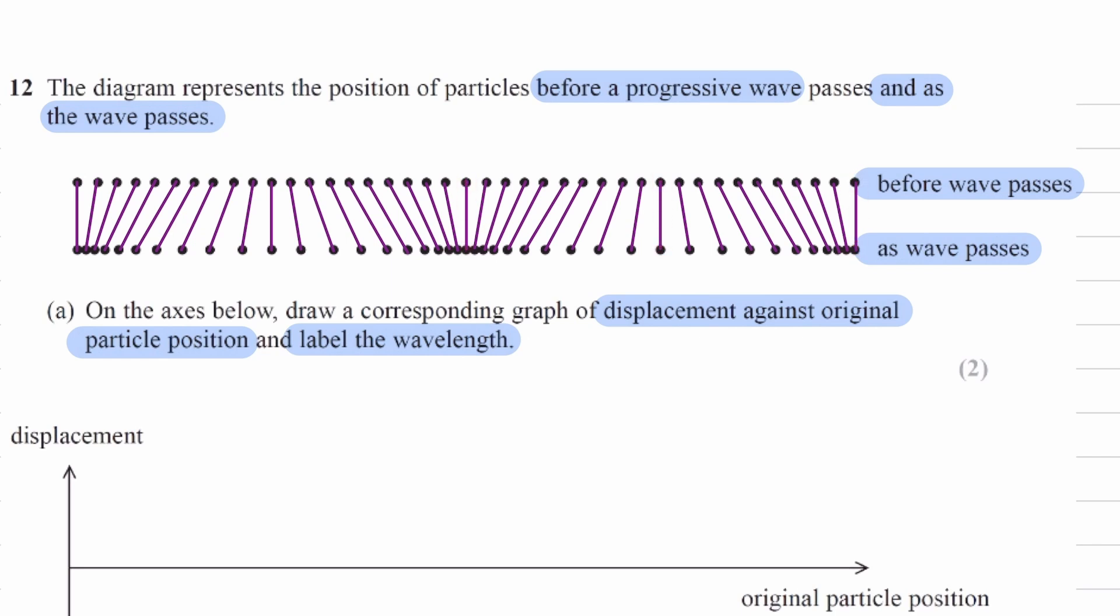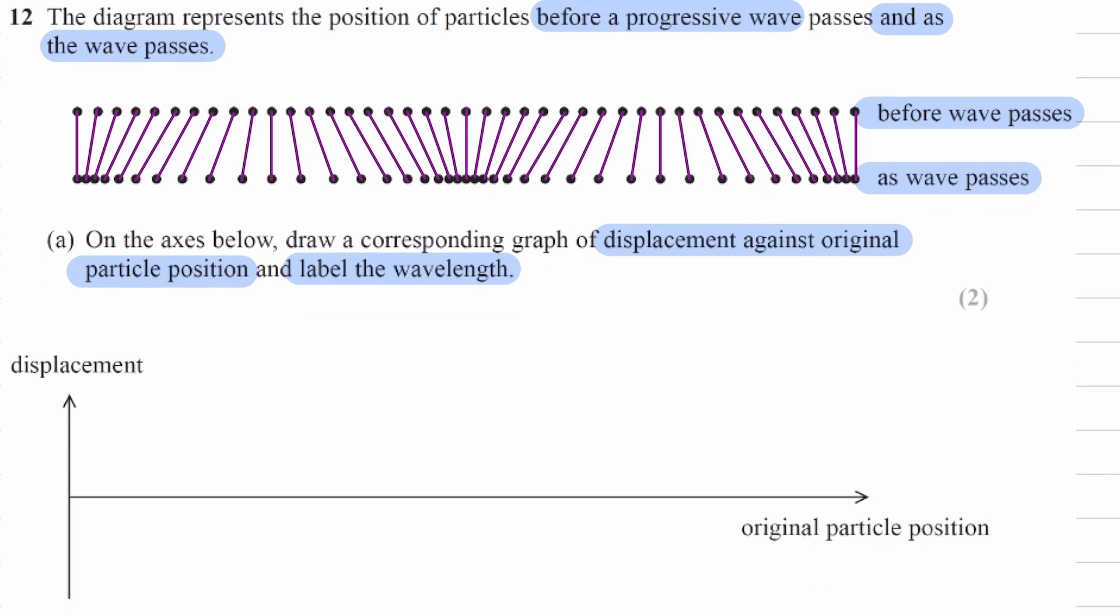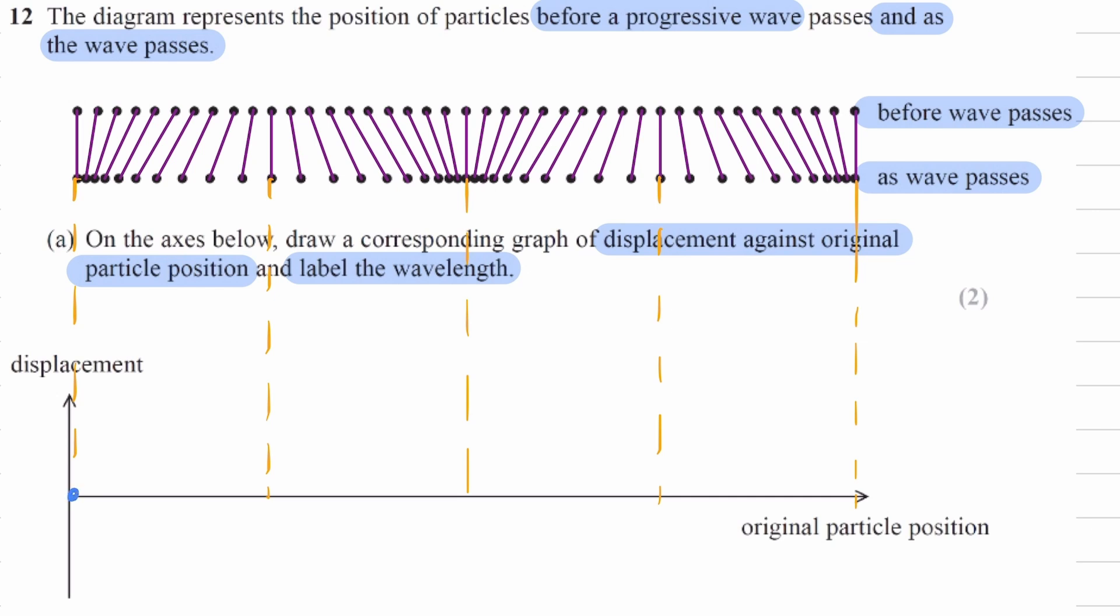So all of those points correspond to, on the graph, points of zero displacement. So I'll just draw some vertical lines down. All of these points correspond to points of zero displacement.